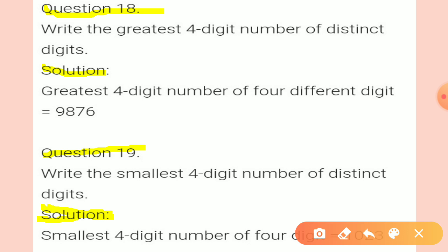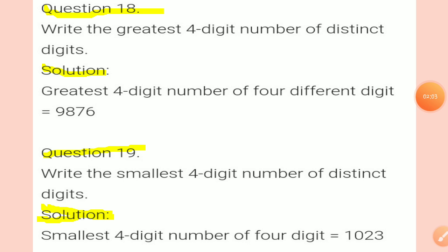Question 18: Write the greatest four-digit number with distinct digits. To do this, start with the largest digit and take each next digit one smaller. So the greatest four-digit number with four different digits is 9, 8, 7, 6. Question 18 completed.